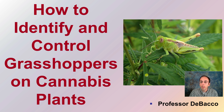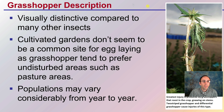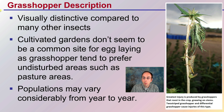We can see here, there's one actively on a cannabis leaf, looking to probably conduct some sort of damage to that plant. Grasshoppers are visually distinctive compared to many other insects.